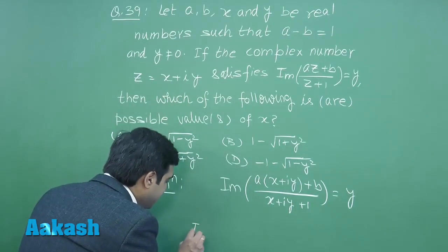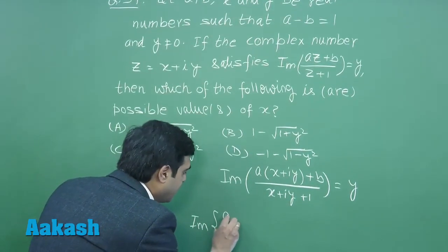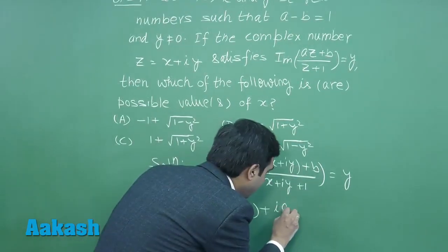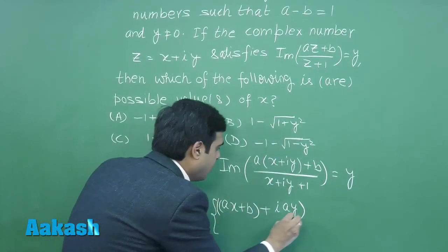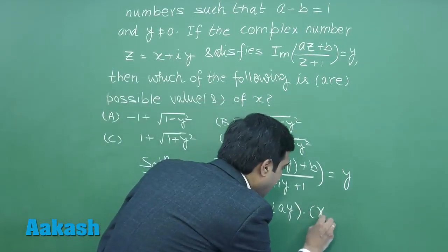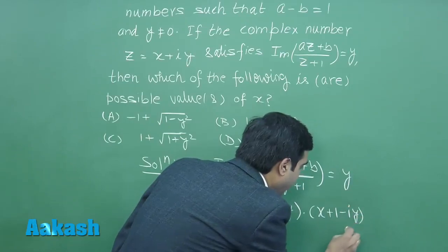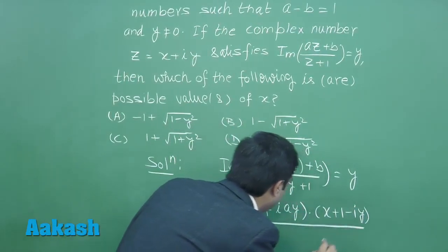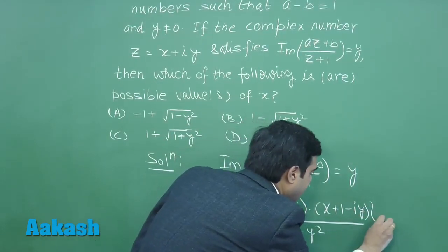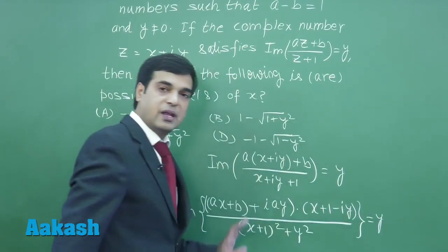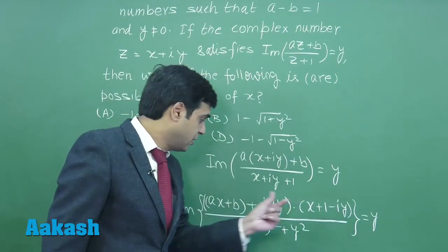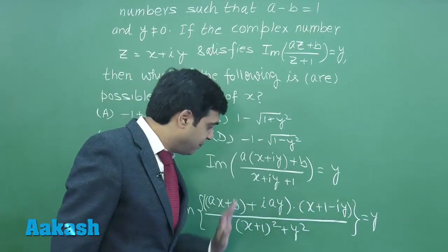This gives us imaginary part of (ax plus b plus iota ay) multiplied with the conjugate of this number, that is (x plus 1 minus iota y) divided by (x plus 1) whole square plus y square equals y. This is clear, imaginary part means ax plus b multiplied with minus y and ay multiplied with x plus 1.